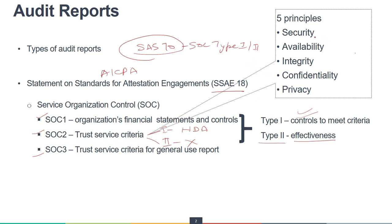SOC 2 works on five principles: security, availability, integrity, confidentiality, and privacy. Remember these five principles from the exam point of view. SOC 3 uses trust service criteria for general use — it is for marketing purposes, shared as a white paper, and is typically uploaded on websites. This means it is available for the general public, so all investors, customers, and partners can view this report freely.